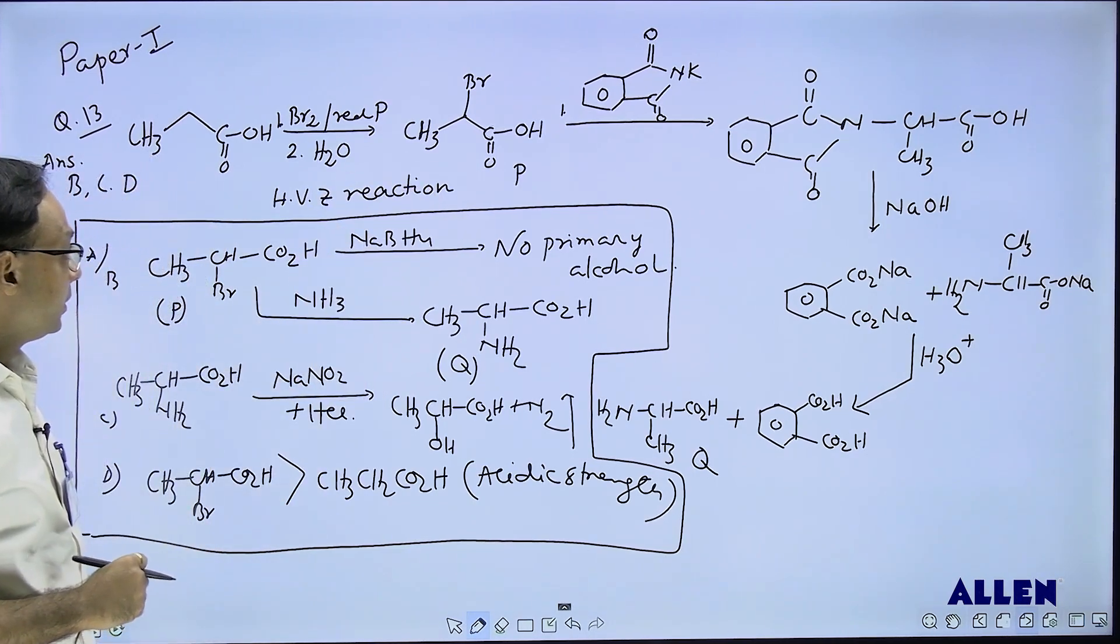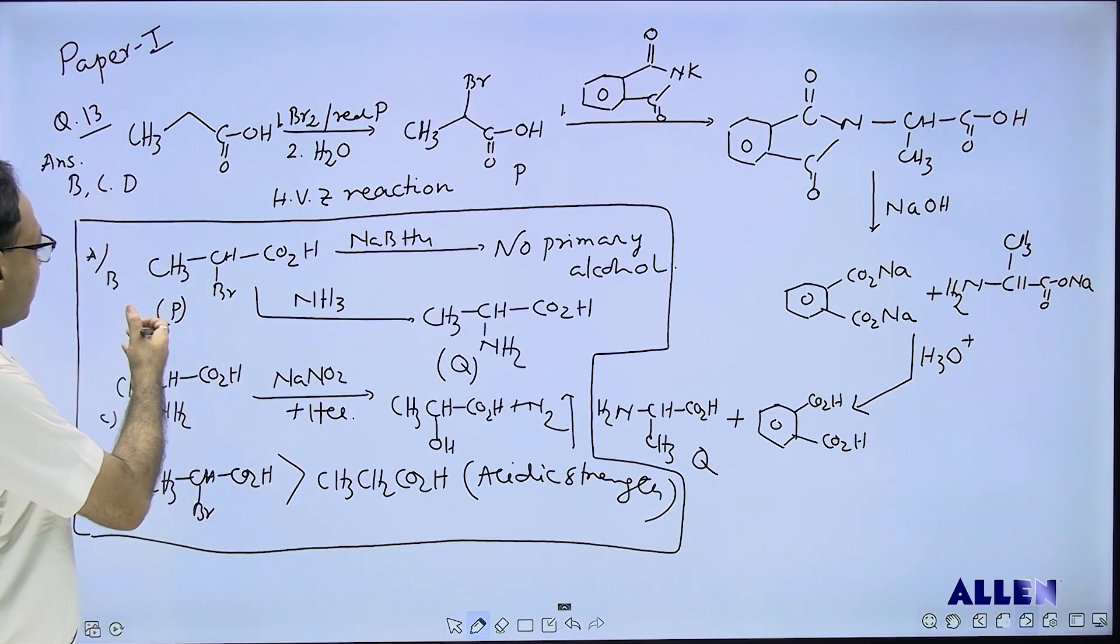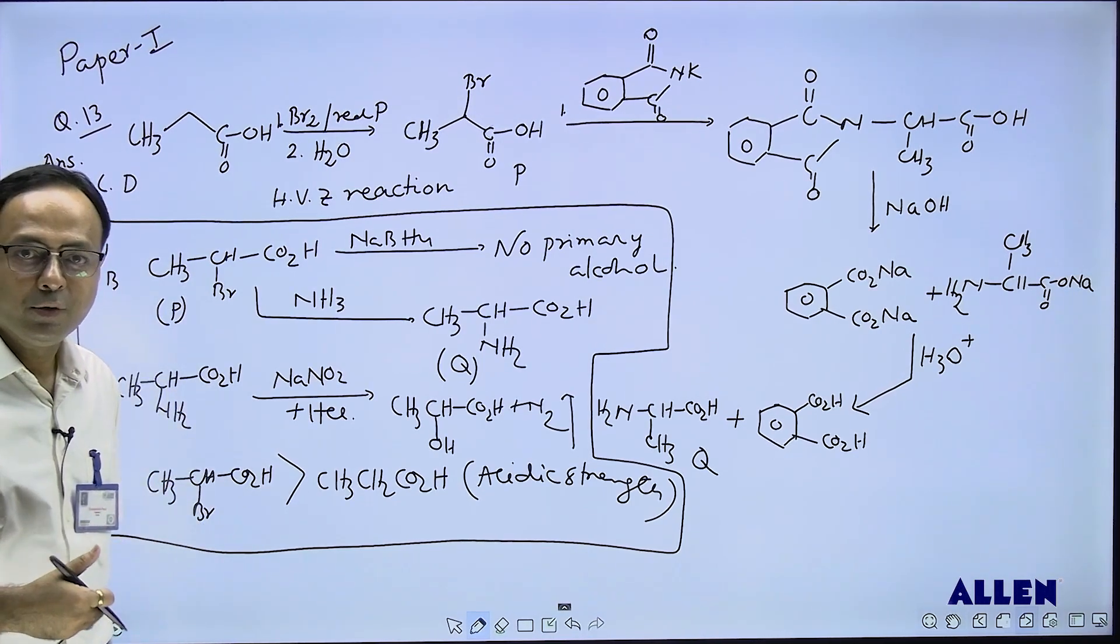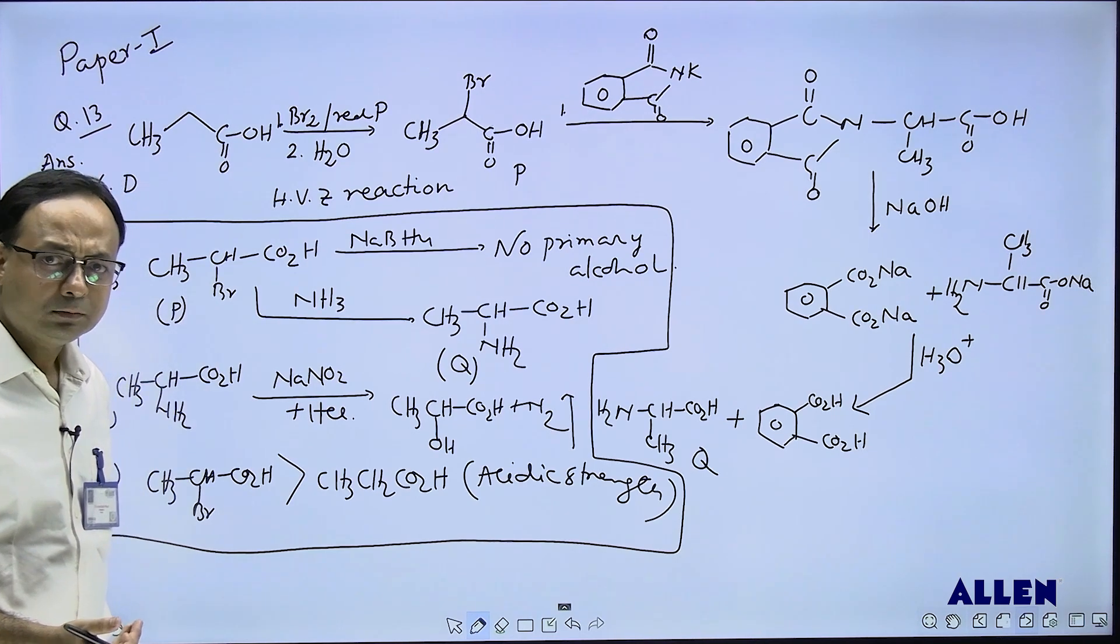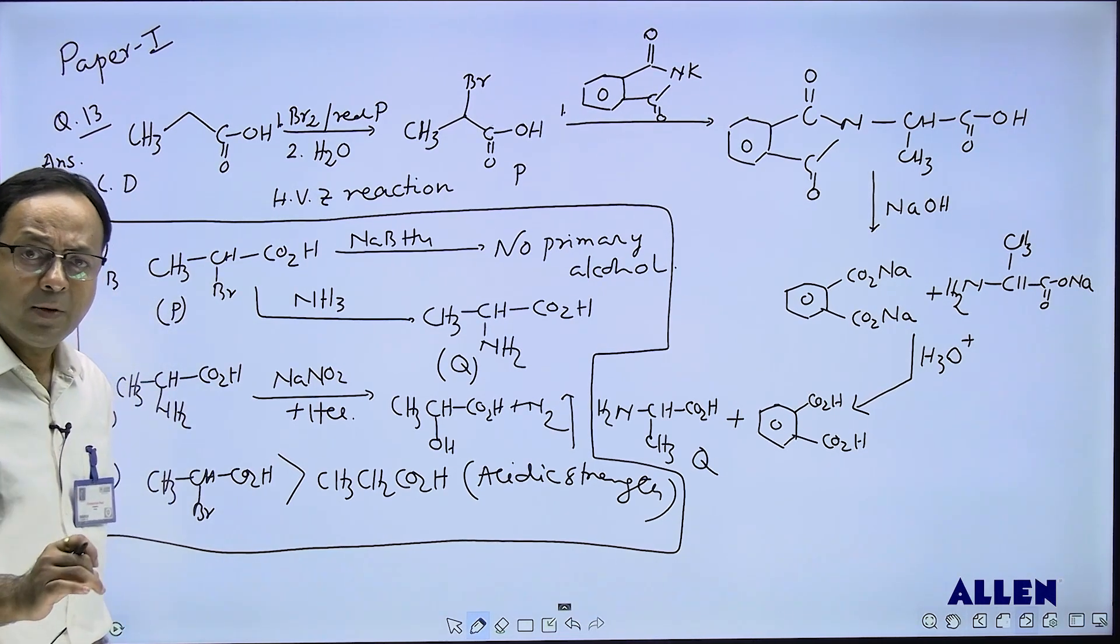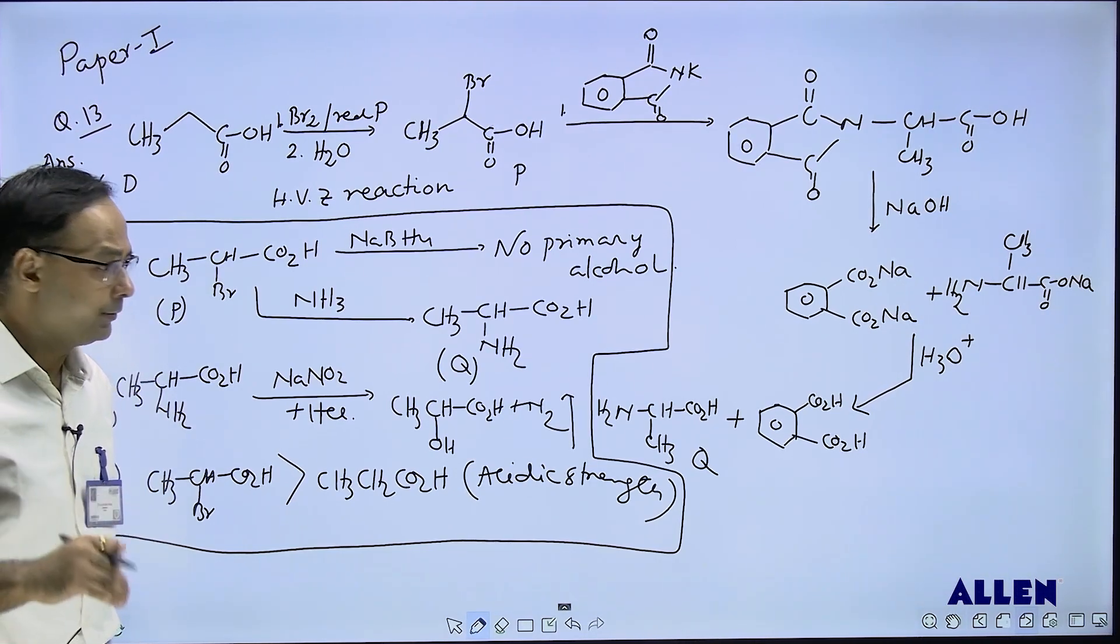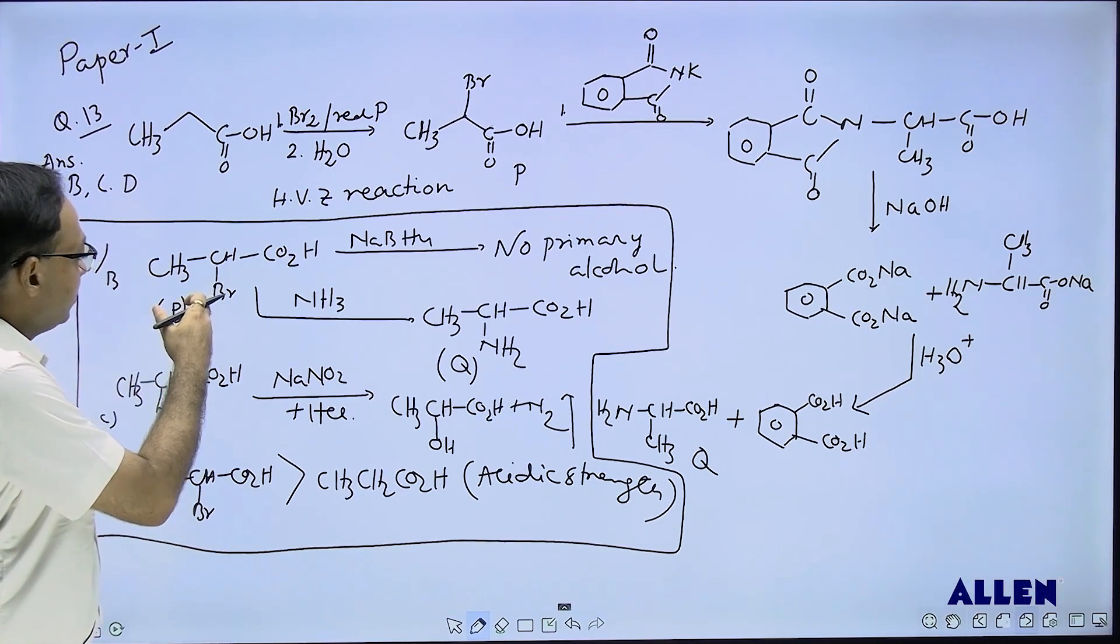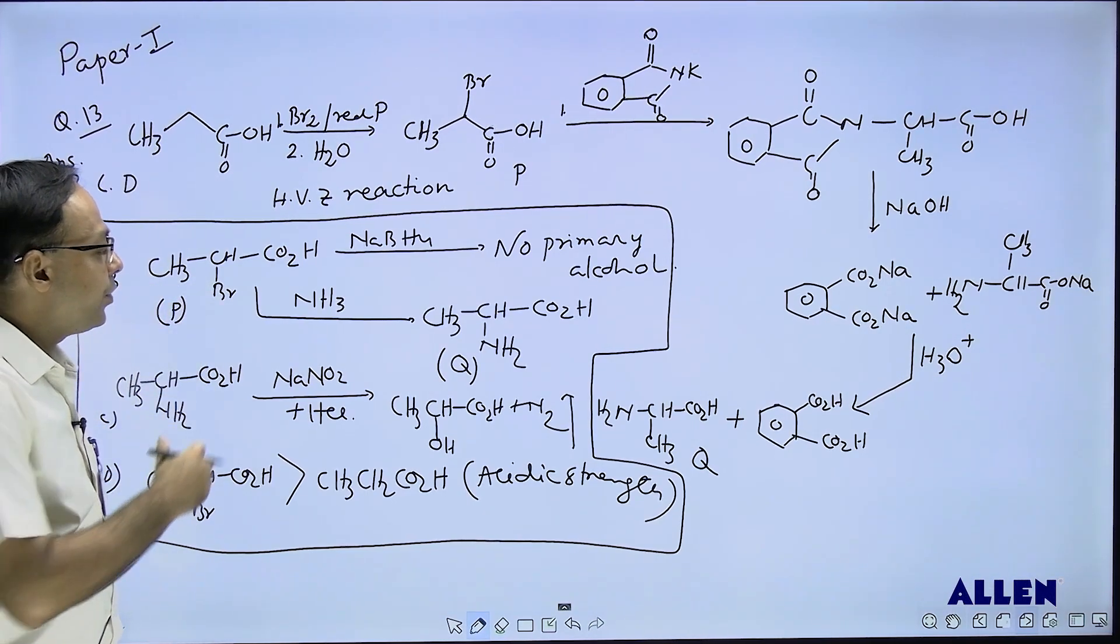Now some options are given. First option: alpha bromo acid is treated with NaBH4, primary alcohol is not formed. We know because NaBH4 cannot reduce carboxylic acid. Option B: alpha bromo acid when treated with ammonia, Q is formed, which is a correct statement.